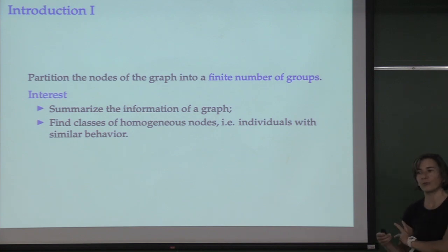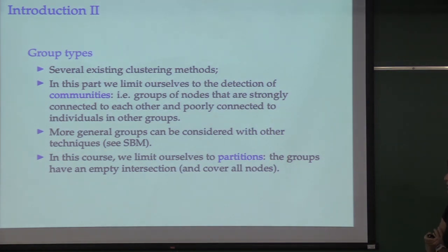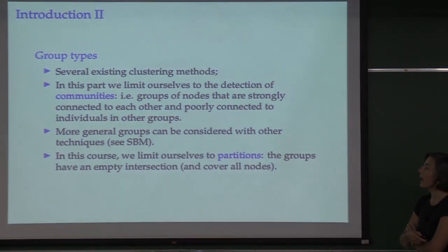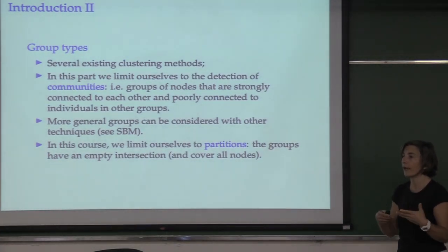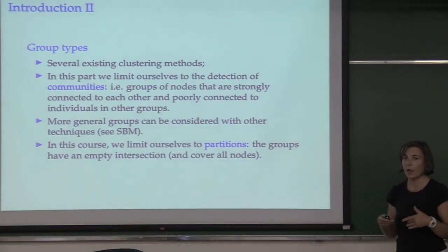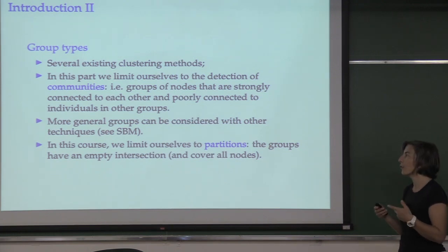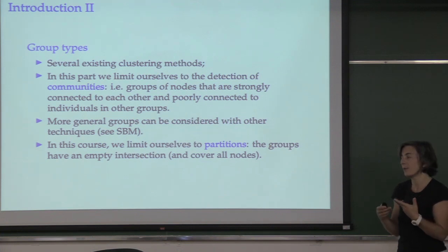In this lecture we're not going to take that path; we are doing something else which will be a little bit more restrictive but also interesting. There are several types of groups we could look for, and this goes with several existing clustering methods. Here we will limit ourselves to the detection of communities. A community is a group of nodes that are strongly connected to each other and weakly connected to individuals in other groups.